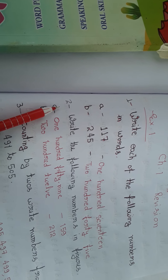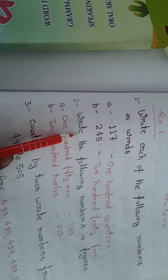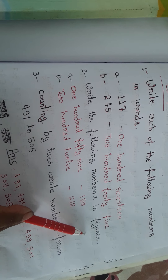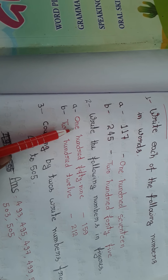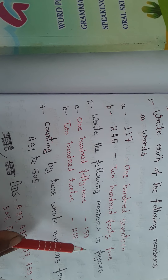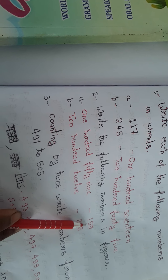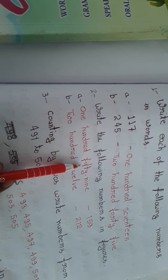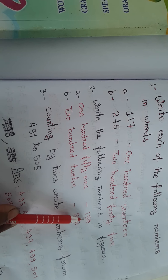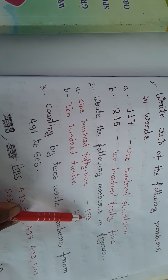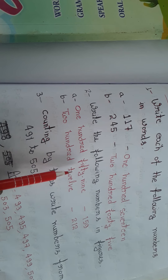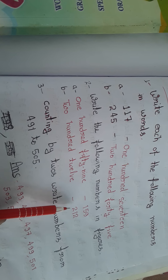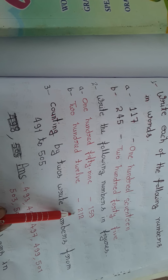Number two: write the following numbers in figures. Words are given and we have to write them as numbers. One hundred fifty-nine: 159. Two hundred twelve: 212.